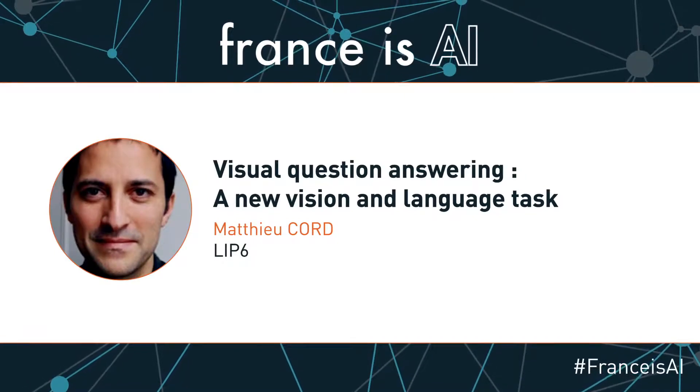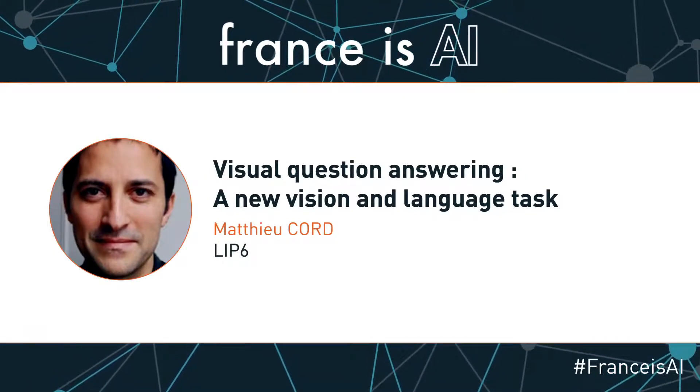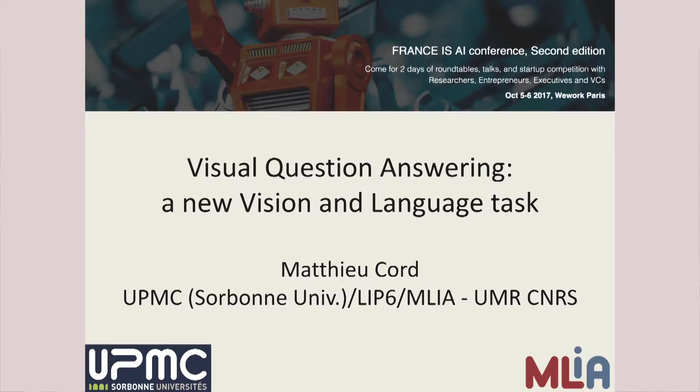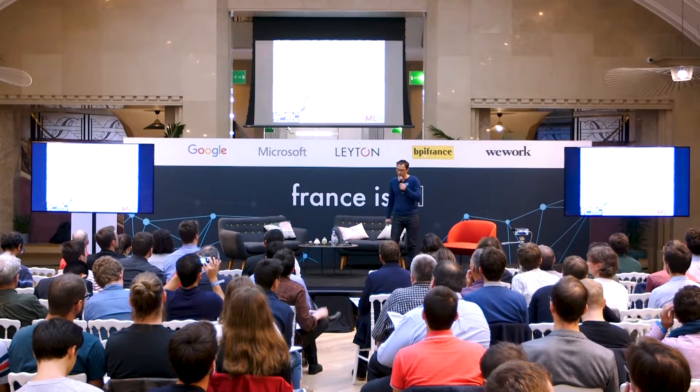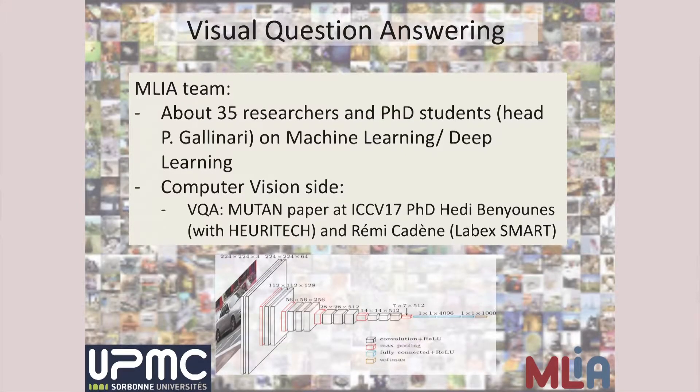It's my pleasure to introduce a new task in computer vision called visual question answering. I am a professor at UPSIS, working with Ludovic Denoyer in the MLIR team headed by Professor Patrick Gallinari. We do a lot of work on machine learning and deep learning. Today's subject was done with two of my PhD students, Eddie Belmunez and Rémi Cadenne, and our approach is called MUTANT.